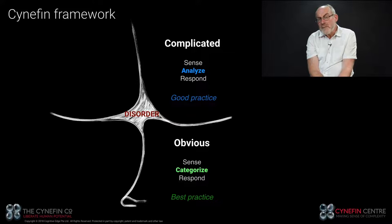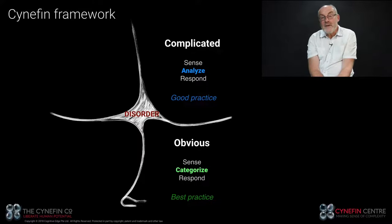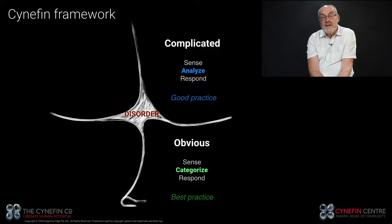Experts can be trusted within the bounds of their expertise if the situation is complicated, but in a complex domain they only create hypotheses, and a lot of hypotheses are wrong. The danger is that if we believe a complex system is complicated and the expert gets it wrong, we lose trust in expertise. So the boundary between complicated and complex is important — on one side, someone with the right training can be trusted; on the other side, they can't. In single morbidity medical situations one expert may know everything, but in multi-morbidity situations with interactive elements it may be more complex and require a multi-team approach.